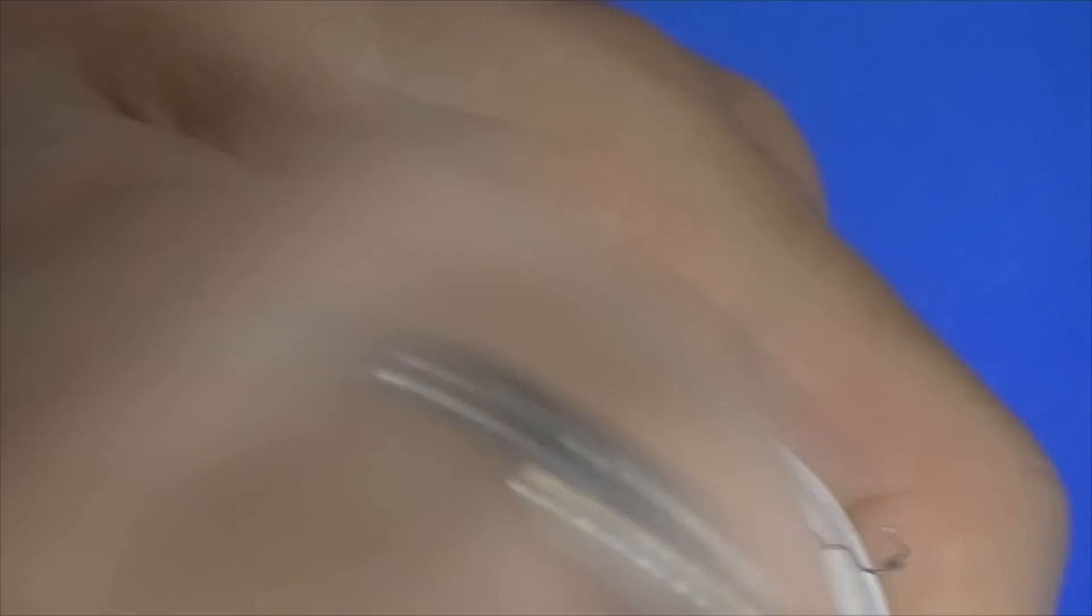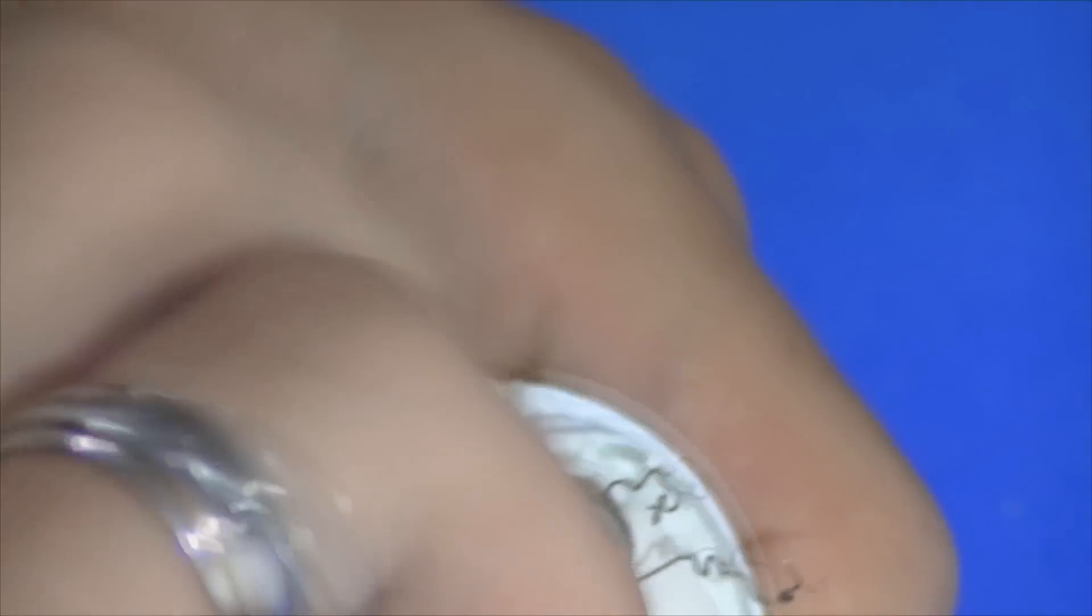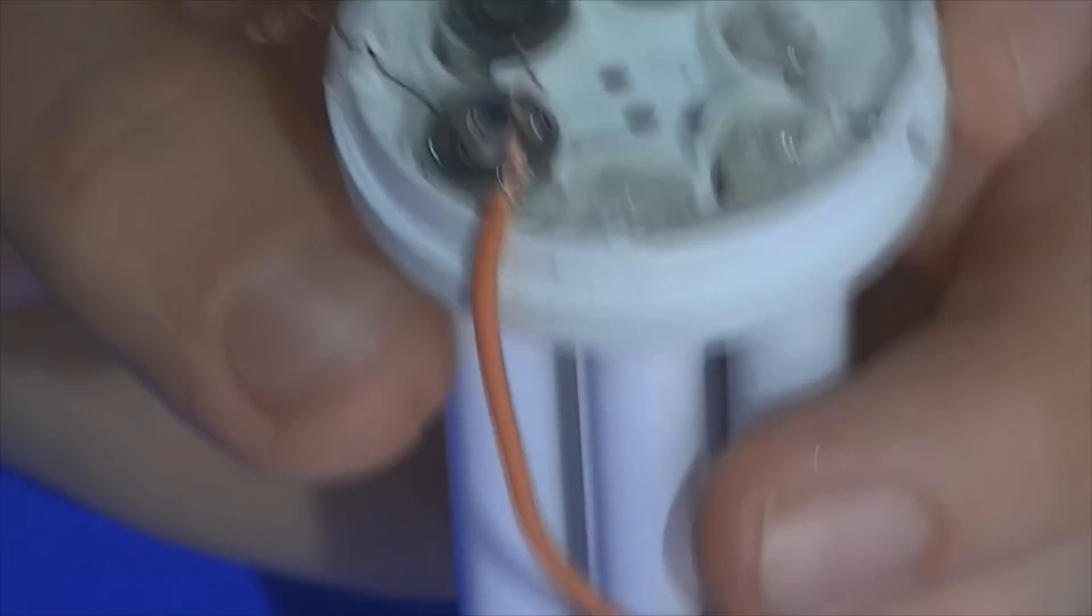Vou pegar o filamento, vou encostar aqui no cobre do fio e vou enrolar. Não precisa ser necessariamente a solda aqui pessoal. Podemos enrolar aqui. O importante é fazer o contato do filamento com o fio. Aqui. Beleza?